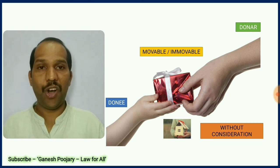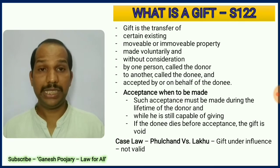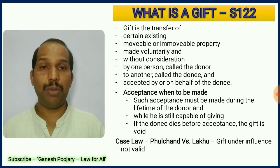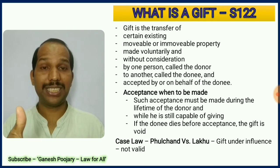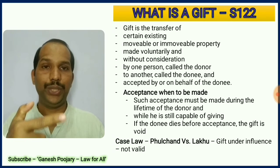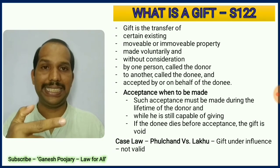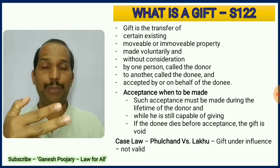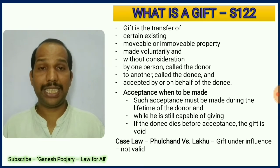Section 122 throws a lot of light on what is a gift and its essentials. It says gift is a transfer of certain existing movable and immovable property. First, it is a transfer. Second, it must be certain and existing — you cannot give something which is future property; you can transfer only existing property. Third, it can be movable or immovable property.